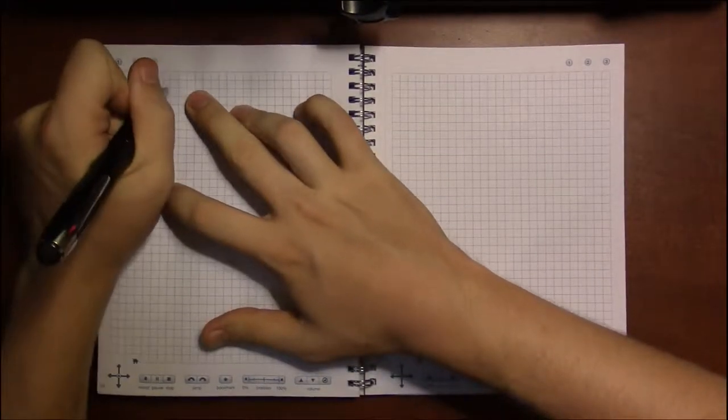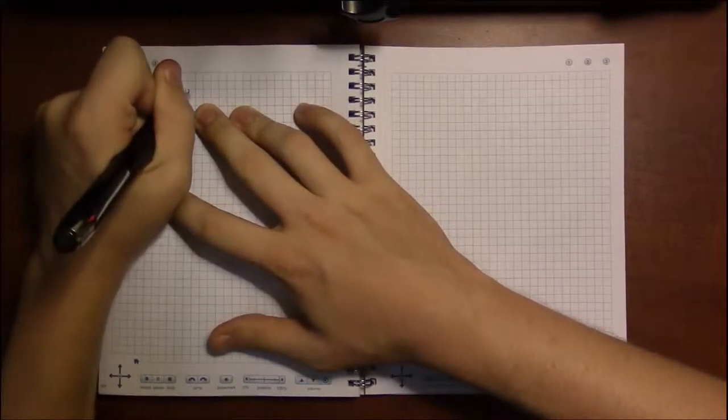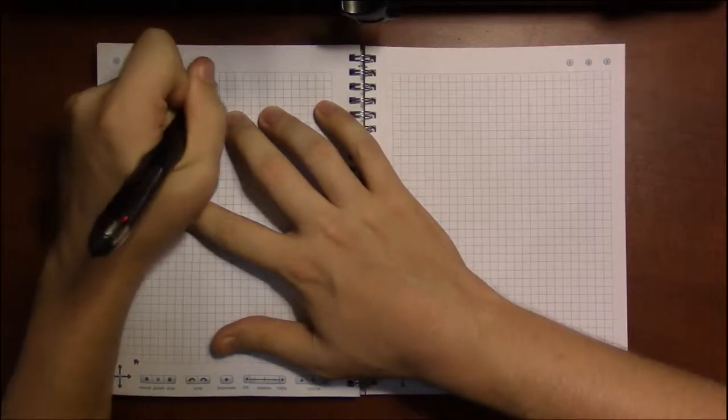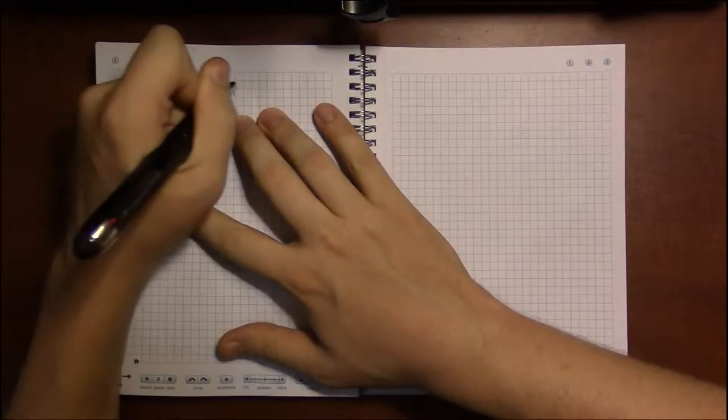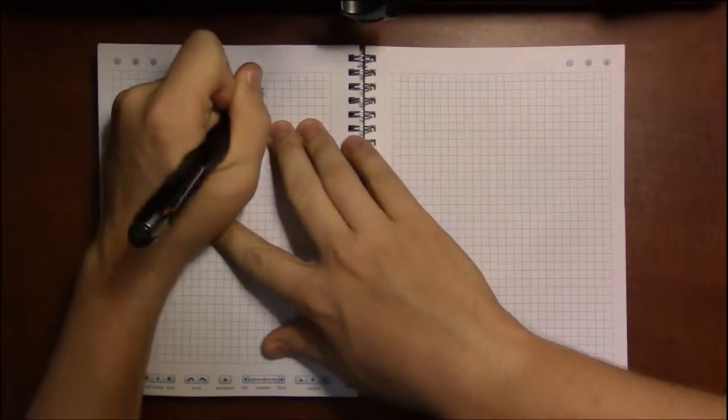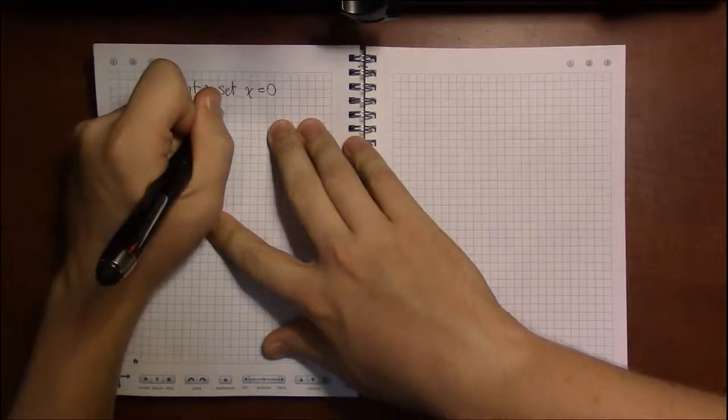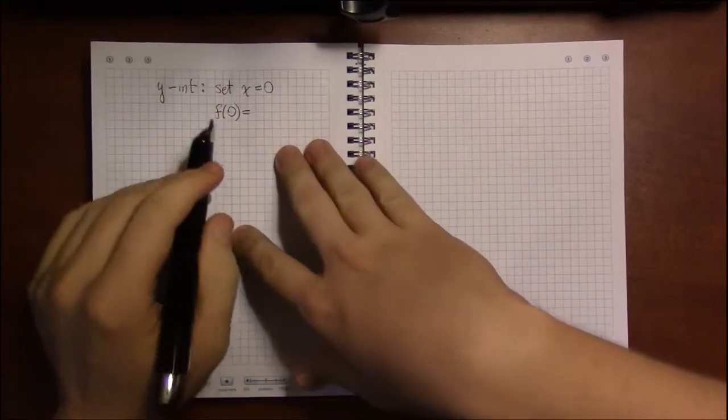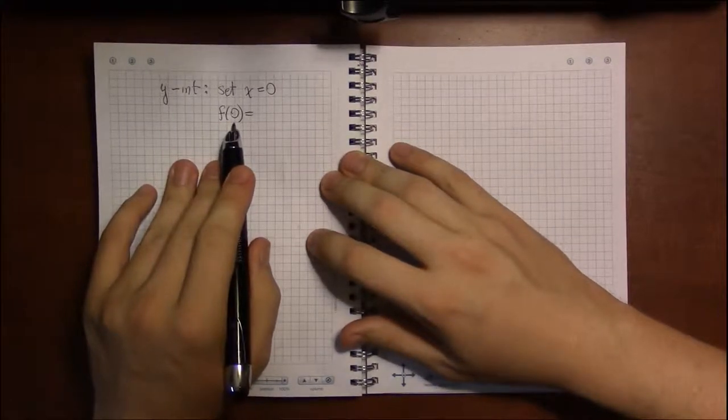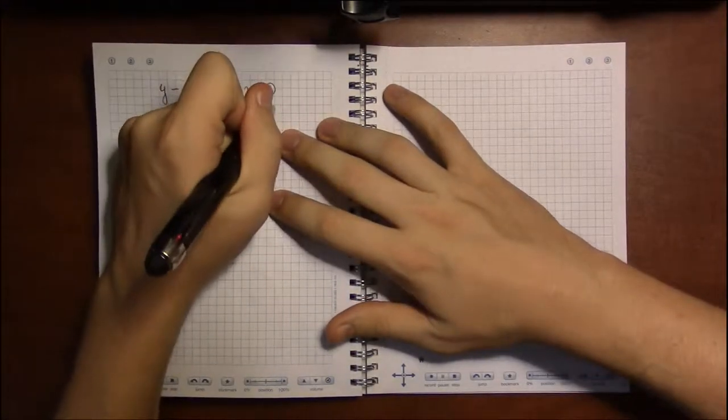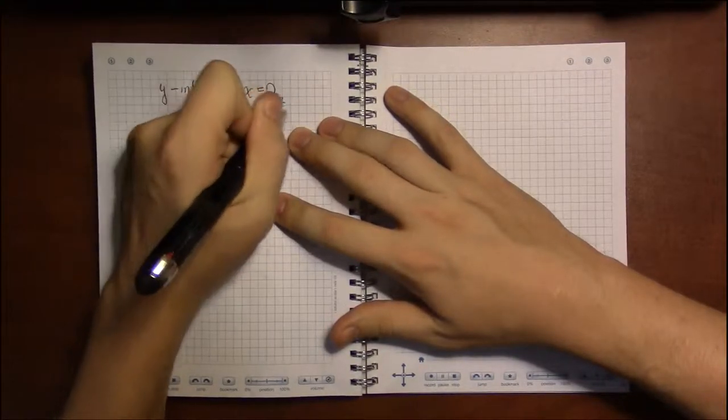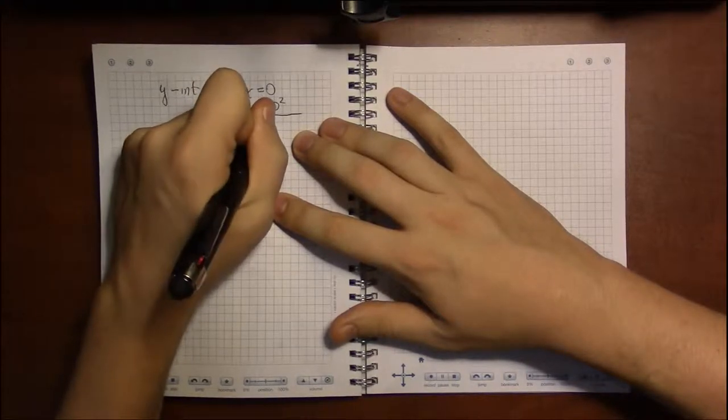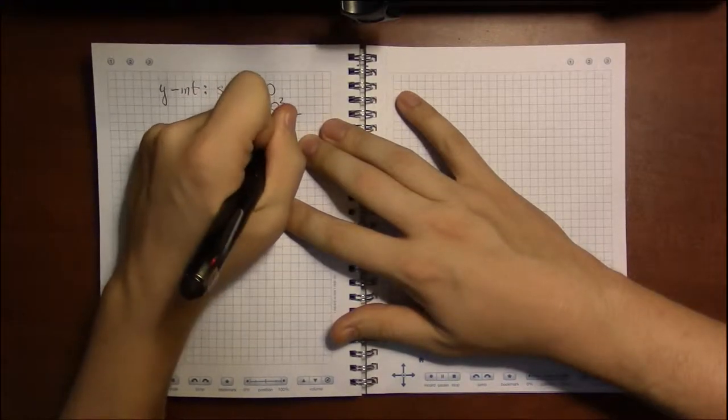To get the y-intercept of a rational function, just like for any other function, we set x equal to 0 and find y. We plug 0 into the formula for the function. In this case, it's x squared, so this will be 0 squared divided by x squared minus 9, which now will be 0 squared minus 9.